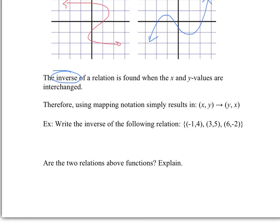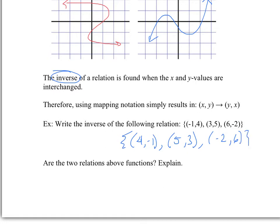Let's look at a function defined by three points. If you were to sketch this on a graph, you'd just have three points. To find the inverse, we simply interchange all the x and y values. So the inverse points would be (4, −1), (5, 3), and (−2, 6). And that would be the inverse — simple enough.